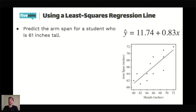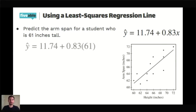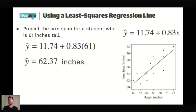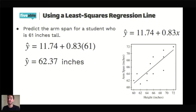For example, if you need to predict the arm span for a student who is 61 inches tall, 61 inches would be height, so x would be 61. This is a straightforward algebra situation where you evaluate y-hat when x is 61. Busting out our calculators, we can see that the predicted arm span is about 62.37 inches. And if you try to line up at x equals 61 on the graph and go up to where the line is and look over on the y-axis, you'll see it's going to be really close to 62, maybe a little bit over 62.